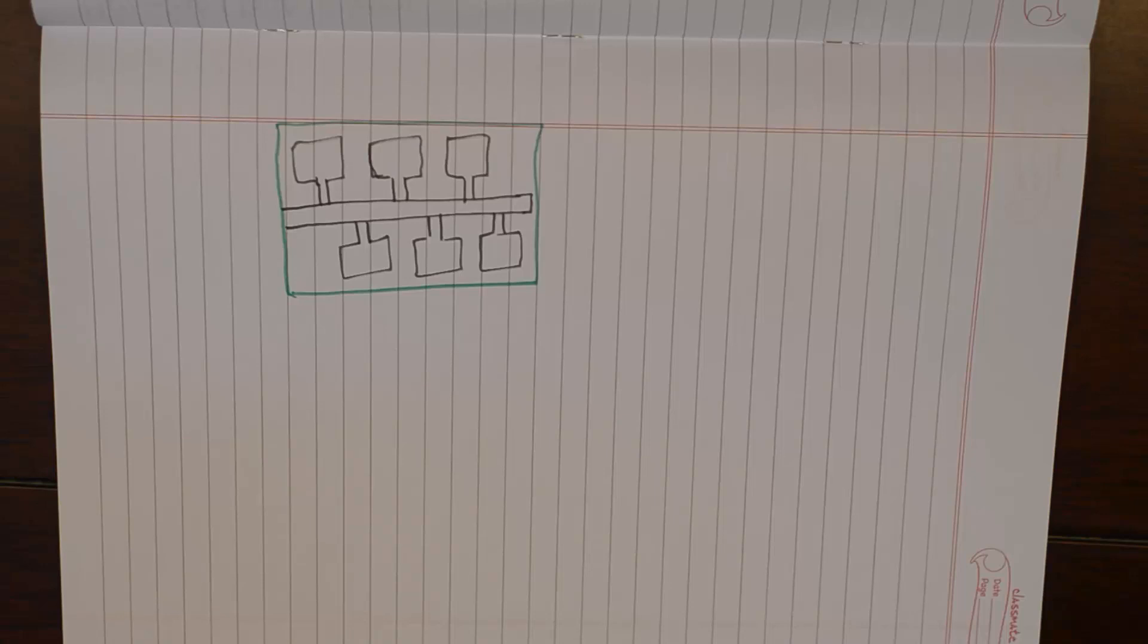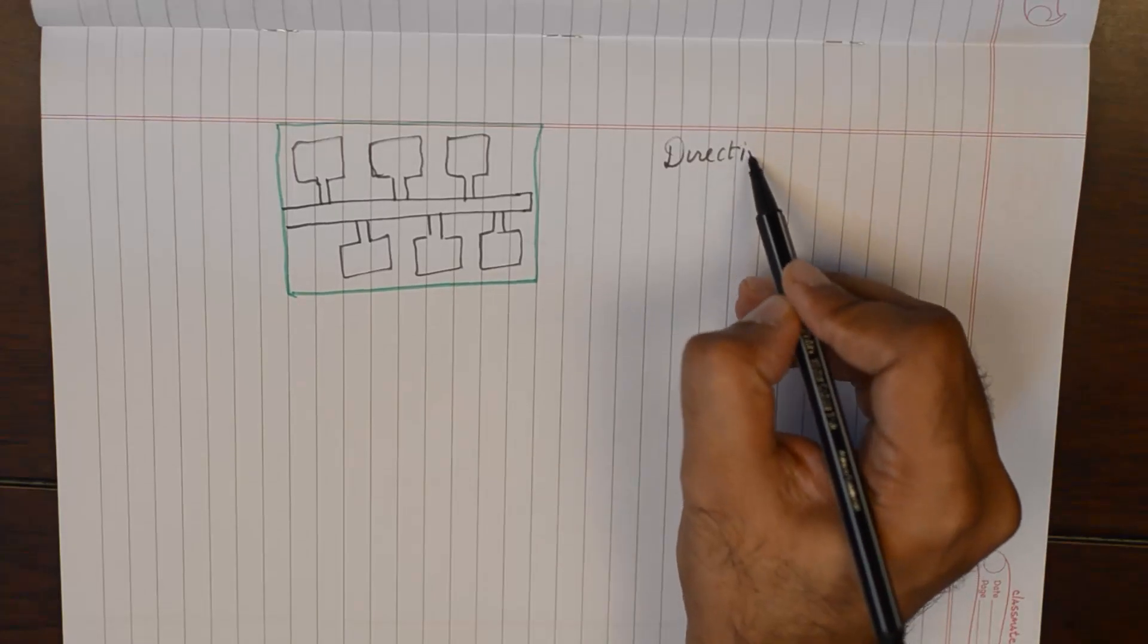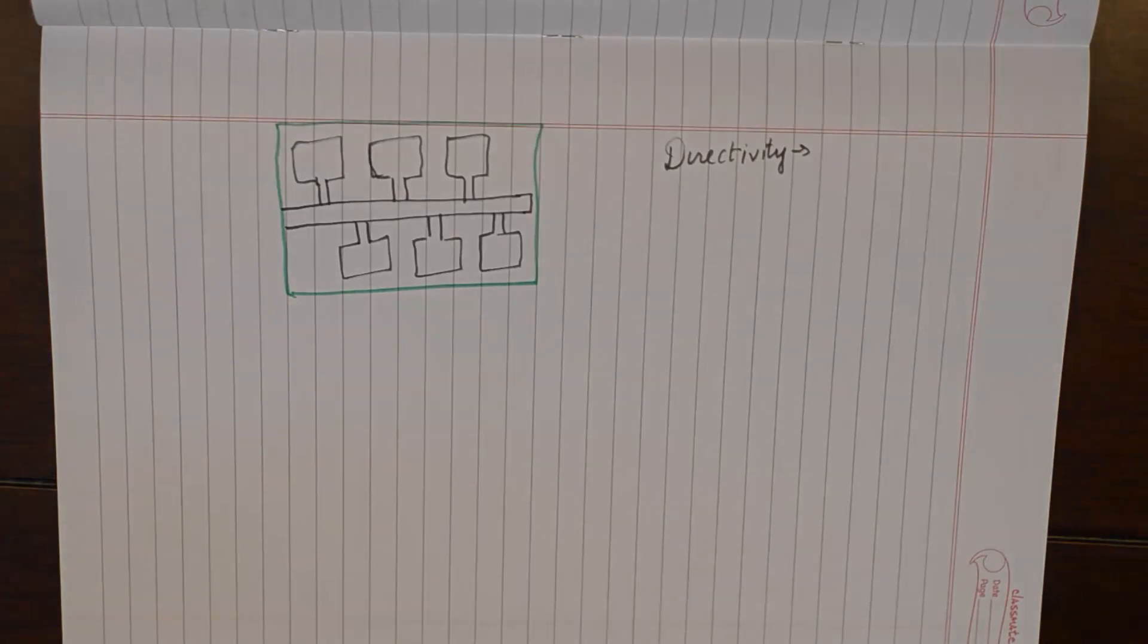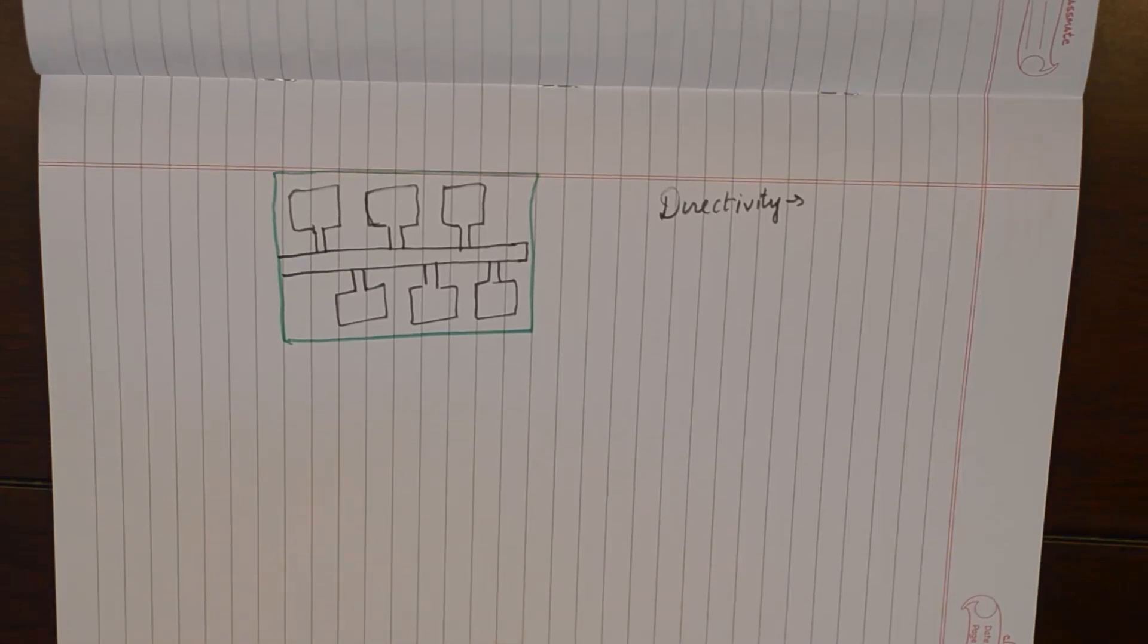The directivity of patch antenna is approximately 5 to 7 dB. The fields are linearly polarized in the horizontal direction, but when we view the patch antenna in the horizontal alignment.